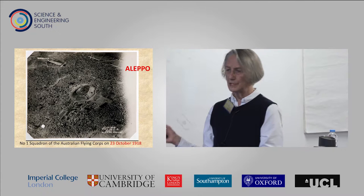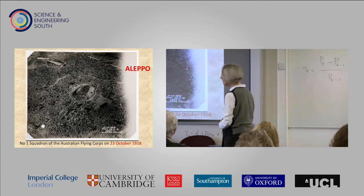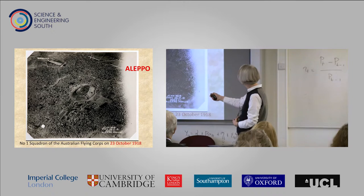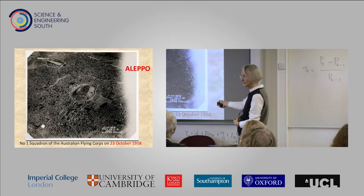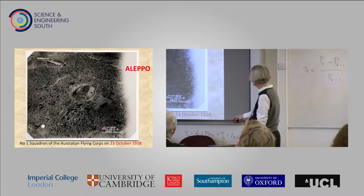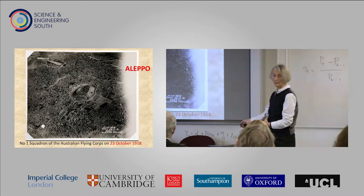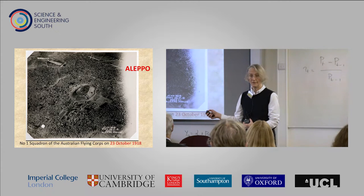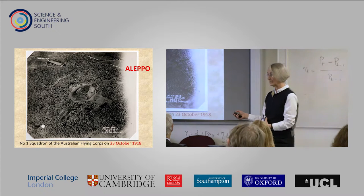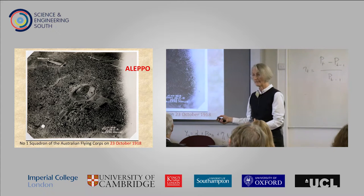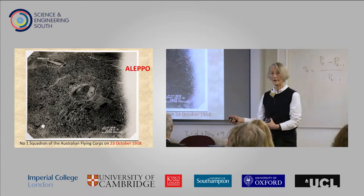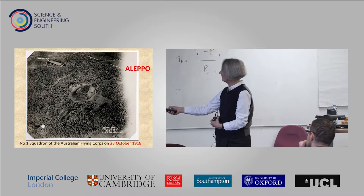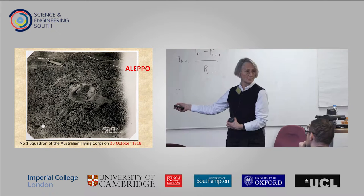The significance of this photograph, which was undoubtedly taken for military reasons — what they're interested in here is the barracks at the top of the photograph — is that it was taken in October 1918 by the Australian Flying Corps. They had no way of realizing how valuable records like this are going to be, particularly this very day. This is a very significant moment just around this image.